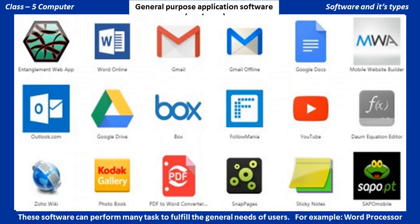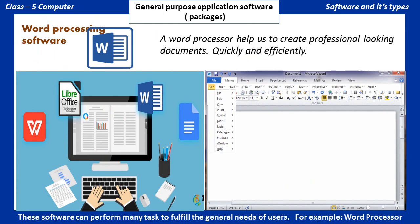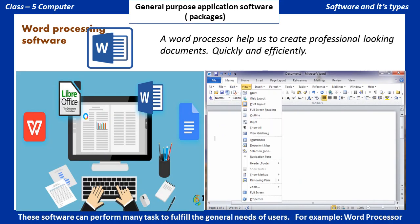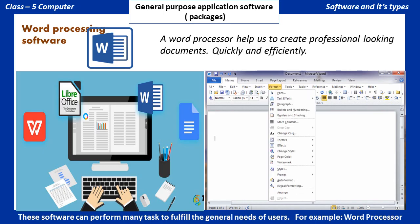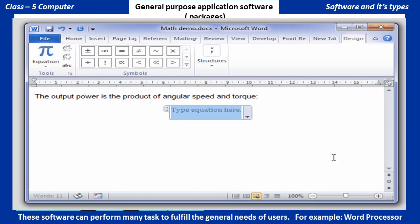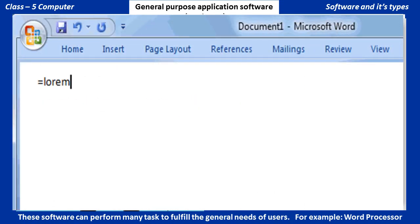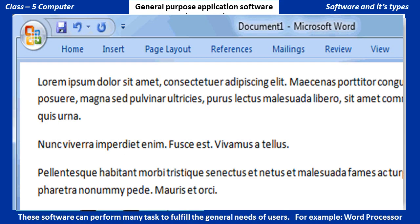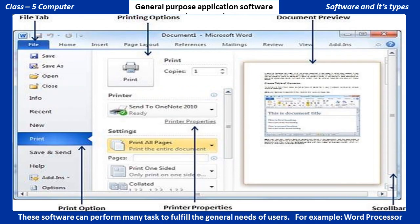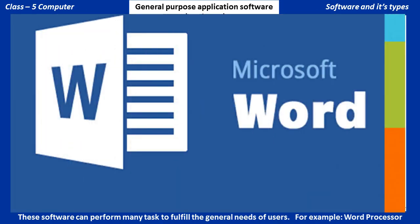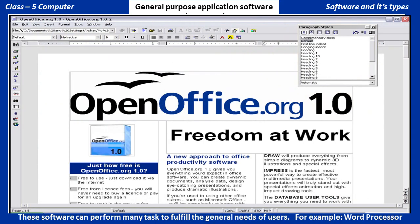General Purpose Application Software packages can perform many tasks to fulfill the general needs of users. Word Processor: A word processor helps us to create professional-looking documents quickly and efficiently. It provides many features to change the appearance of text in the desired manner. You can easily add, delete, rearrange, or beautify the text, and can even produce a hard copy of the document. Examples include Microsoft Word, WordPad, and OpenOffice.org Writer.